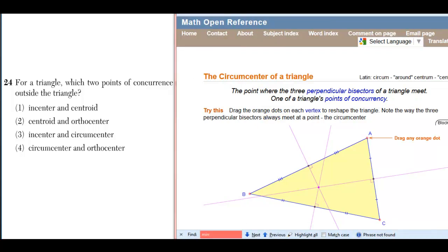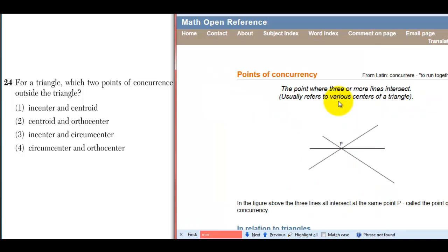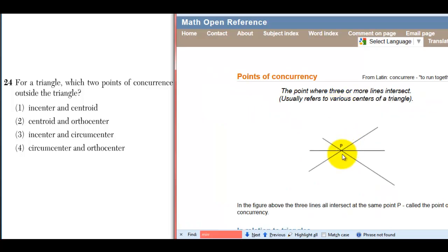The links to mathopenref.com are in the description. On the circumcenter page, it mentions it's one of a triangle's points of concurrency. And if you hover over points of concurrency, it says the point where three or more lines intersect. Point P in this diagram.